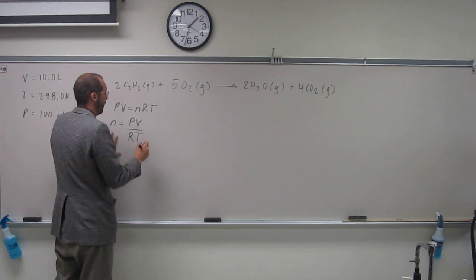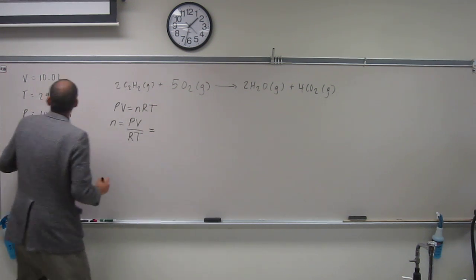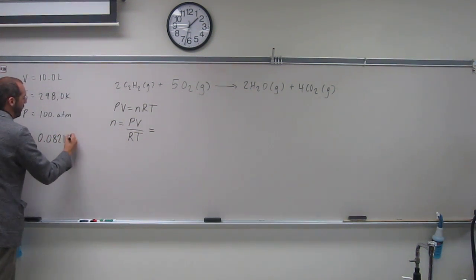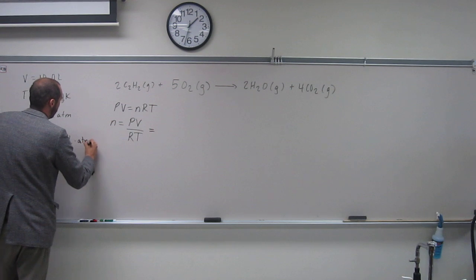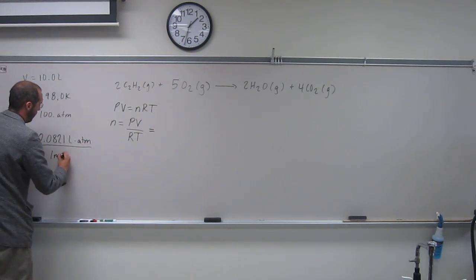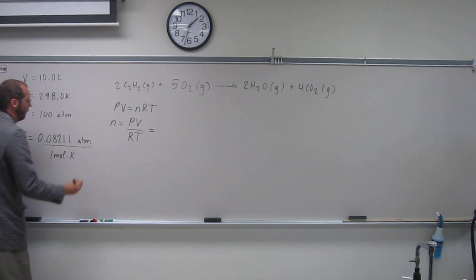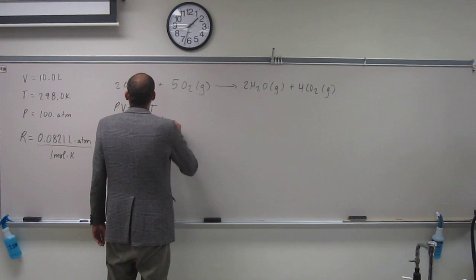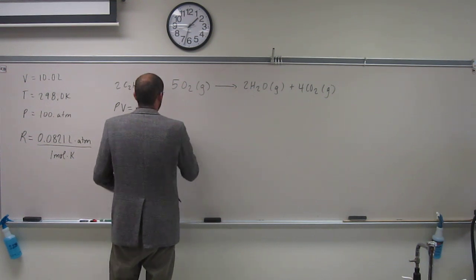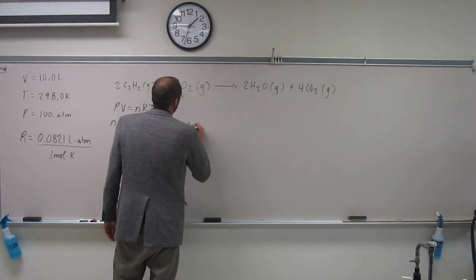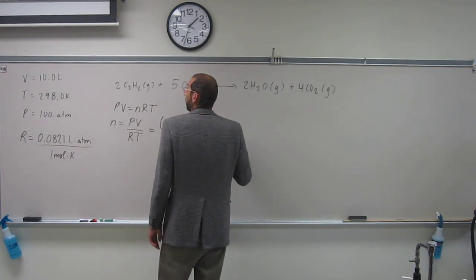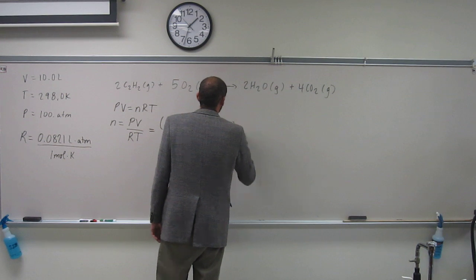Now we just take these numbers. Remember R, that's given to us, 0.0821. So pressure 100 atm, volume 10.0 liter.